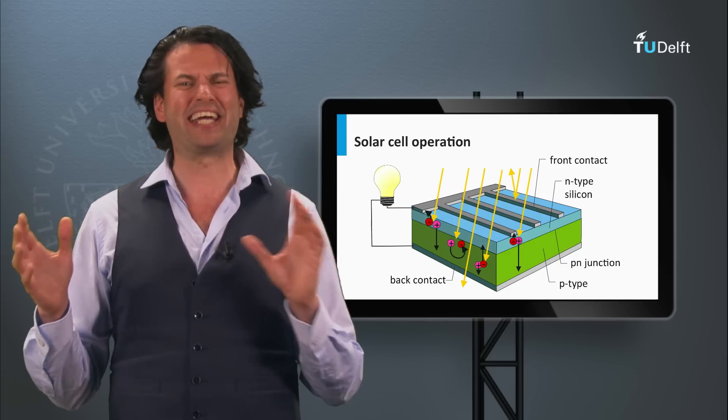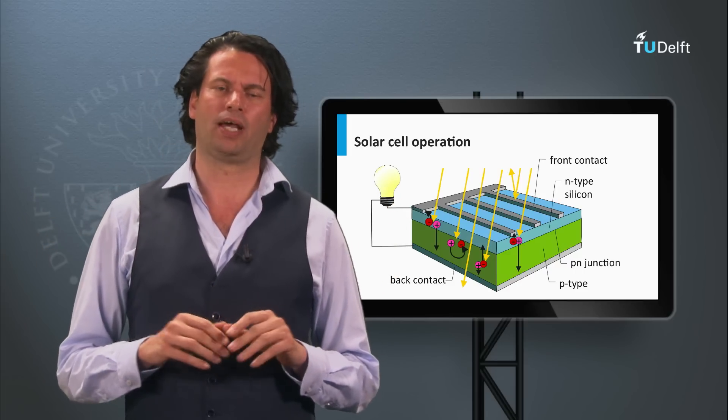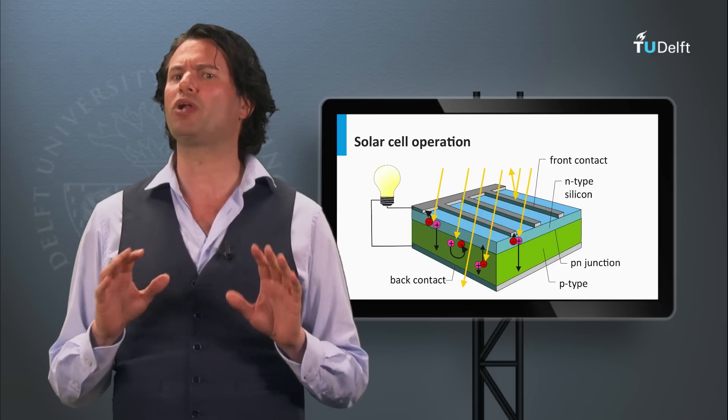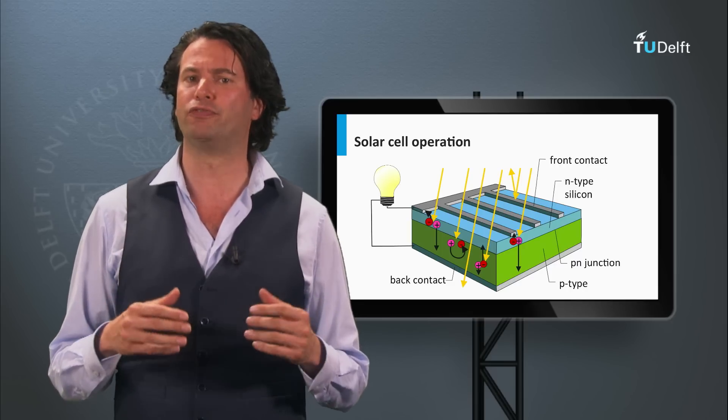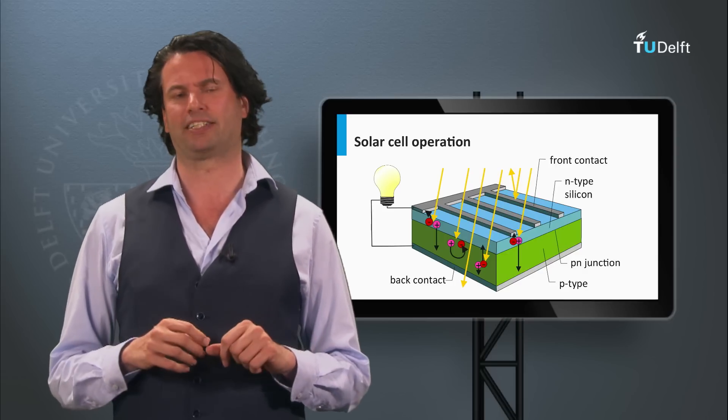So, how can we get electricity directly from sunlight? The mechanism in which solar light is directly converted into voltage or current is called the photovoltaic effect.